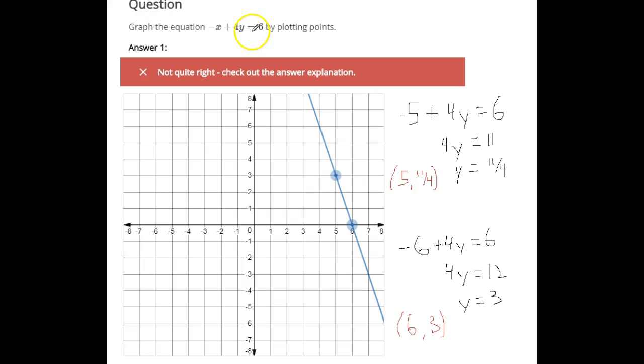A similar problem here, we're going to graph this equation by plotting points. So we're just going to plug in values for x and try to use values that come out to nice whole numbers. Let's start with this one. If you plug a 6 in for x, you'd get negative 6 for the x part. So add 6 to both sides, and you'd have 4y equals 12. Now when you divide both sides by 4, you get y is 3. So we get one of the points is right there at 6, 3.